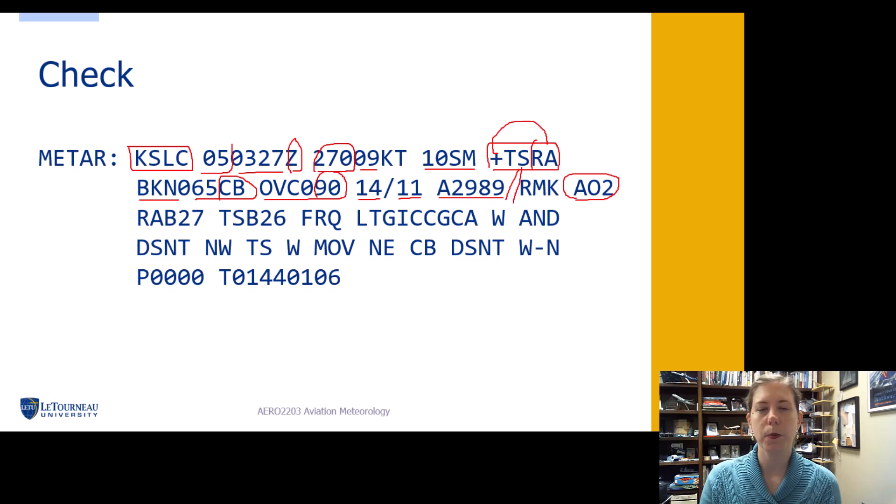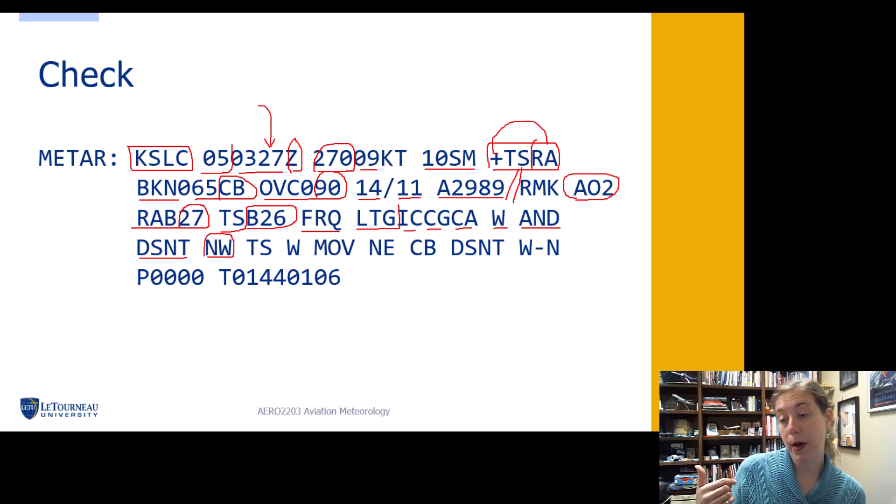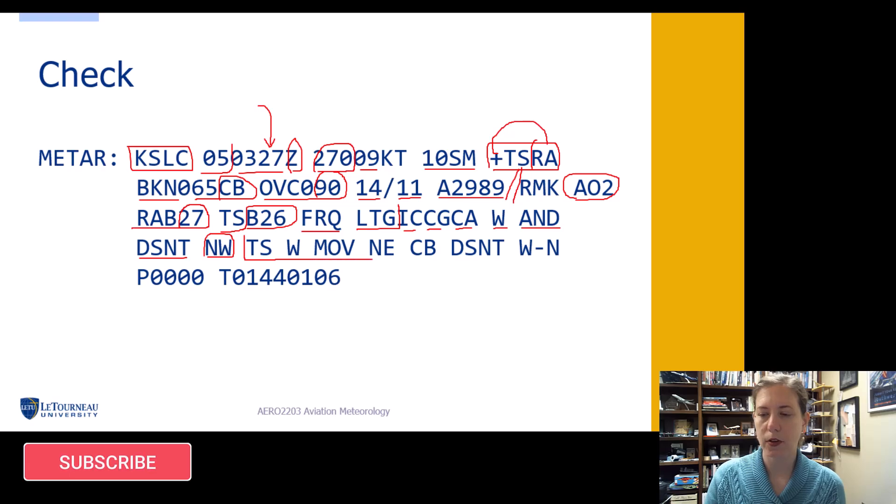Now let's get into our remarks. AO2, so we have an automated system with a precipitation discriminator. Rain began at 27 minutes past the hour, so actually the rain began right as they issued this METAR. Thunderstorm began at 26 minutes past the hour, so one minute before the METAR they issued that thunderstorm began. It probably is what prompted them to issue this METAR actually. And then we have the lightning group. Frequent lightning in cloud, cloud to ground, cloud to air. Then our direction west and distant to the northwest. So that tells me it's within five miles to the west and to the northwest it's more than ten miles away. Next we have a thunderstorm that is west currently moving northeast. Cumulonimbus clouds are seen distant to the west and the north. Perfect.